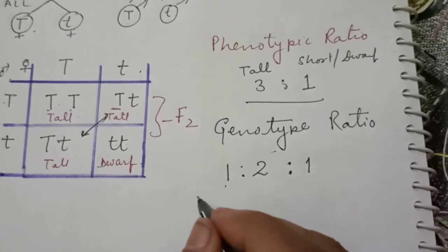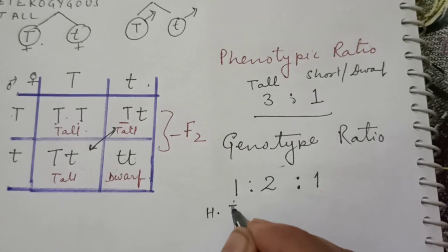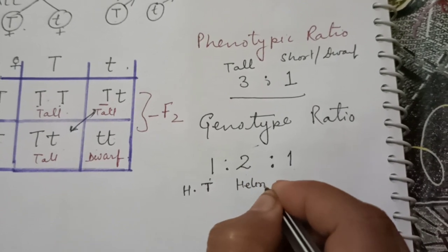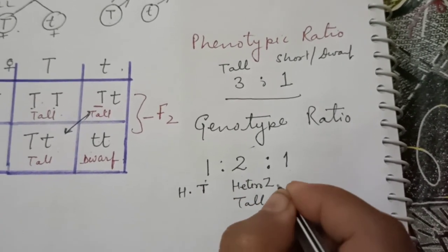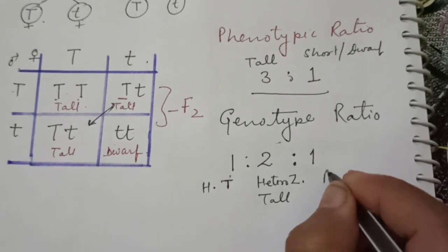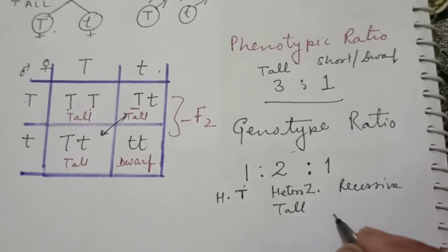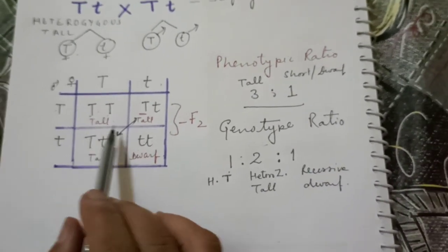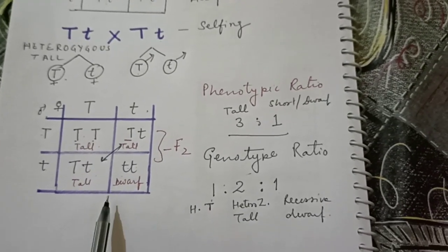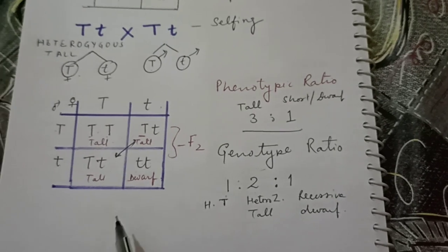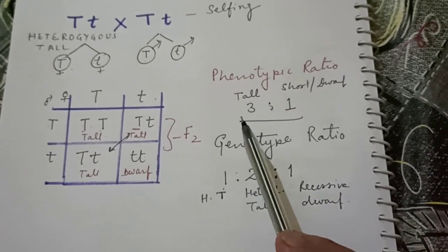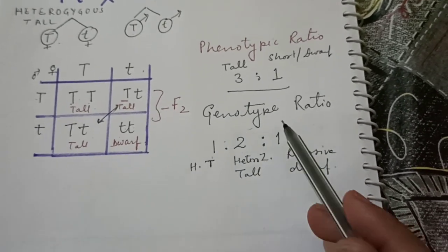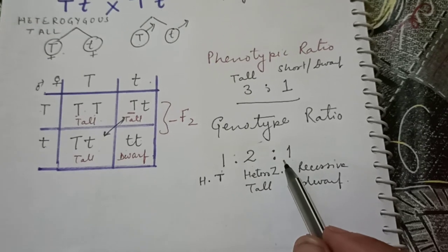1 homozygous tall, 2 heterozygous tall, and 1 last one it is recessive. And as I am talking about the height, so it is dwarf. So this is to be termed as law of segregation because in a monohybrid cross in F2 generation both the traits are visible with the phenotypic ratio of 3 raised to 1, and the genotypic ratio will be 1 raised to 2 raised to 1. So thank you.